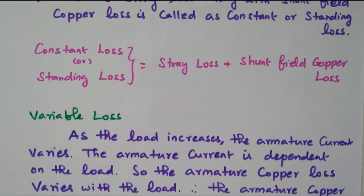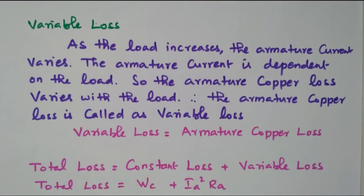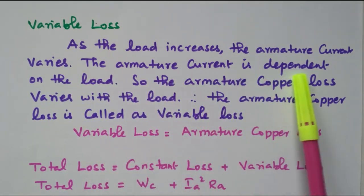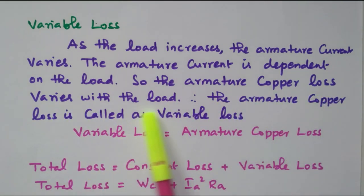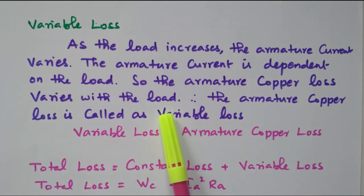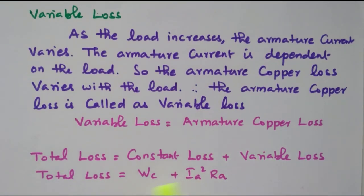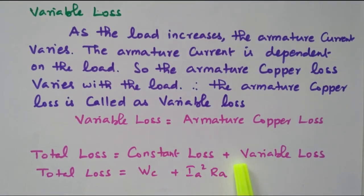Then we have variable loss. As the load increases, the armature current varies — it is dependent on the load. So the armature copper loss varies with the load, because Ia squared Ra: if armature current increases, the loss will also increase. Therefore, armature copper loss is called variable loss. All other losses are constant loss. That variable loss equals armature copper loss. So the total loss is nothing but constant loss plus variable loss, that is Wc plus Ia squared into Ra.